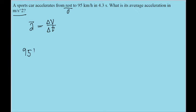Let's take 95 kilometers per hour and convert it into meters per second. First, we convert from kilometers to meters by multiplying this by the conversion factor of 1000 meters over 1 kilometer.